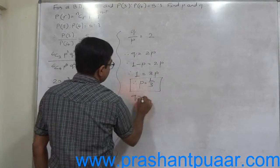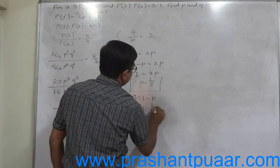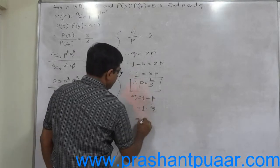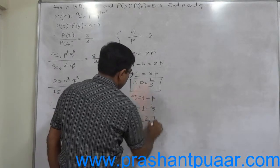Now Q is nothing but 1 minus P, that means 1 minus 1 by 3, so Q equals to 2 by 3.